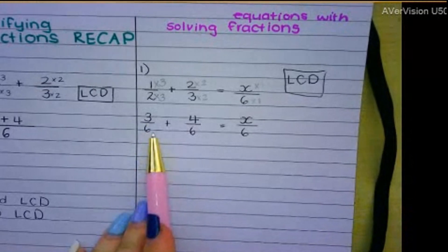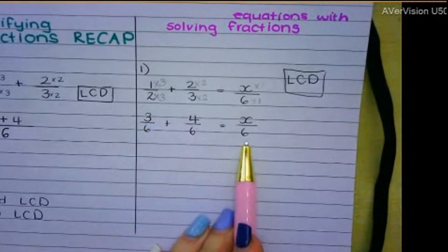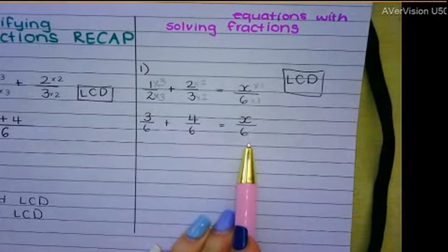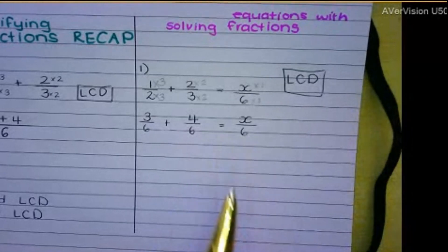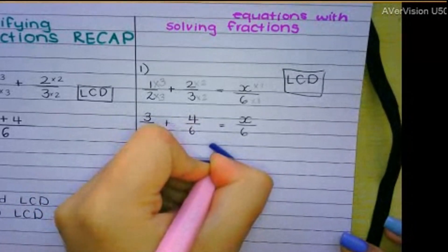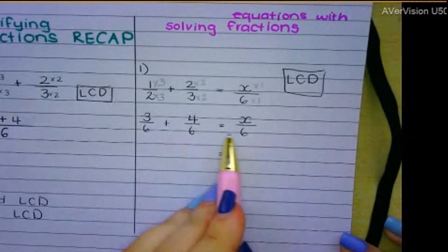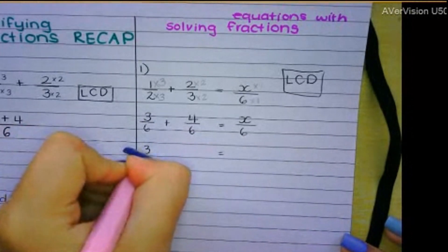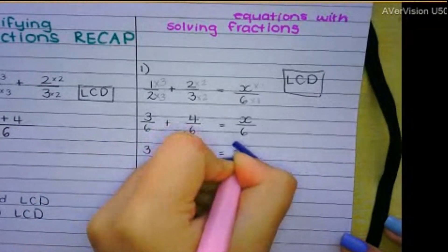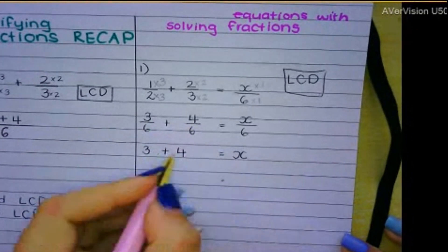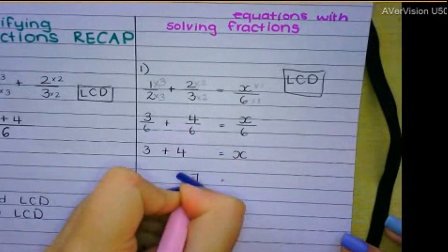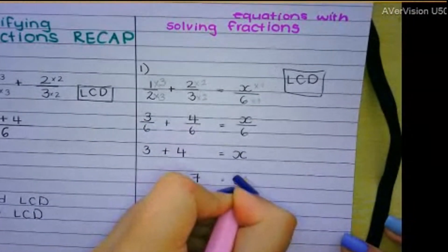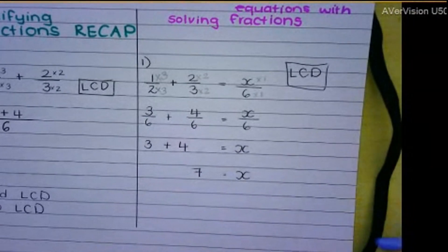Now, when we do solving, do you see we've got them all over the lowest common denominator? Now, because we're solving and because there's an equal sign, what we can do now, it's quite nice, is we can just drop all these denominators. Drop the denominators. So we're left with 3 plus 4 equals x. So 3 plus 4 is 7. So x is equal to 7.